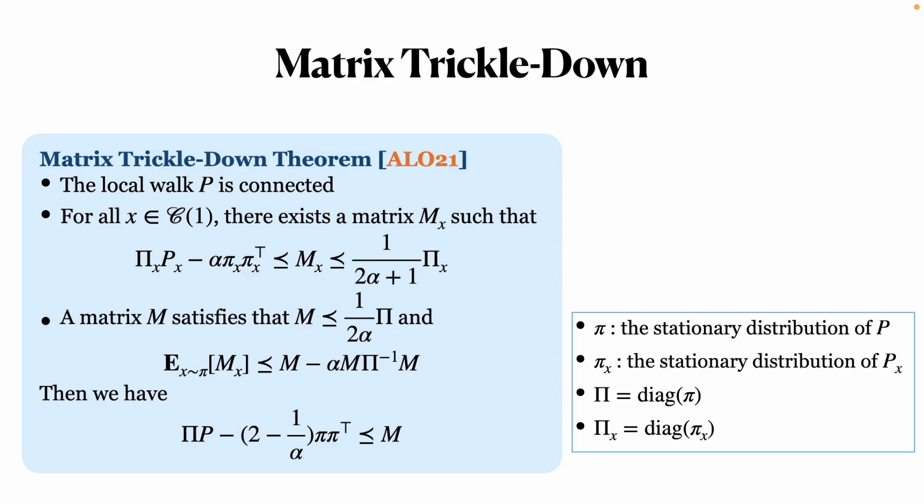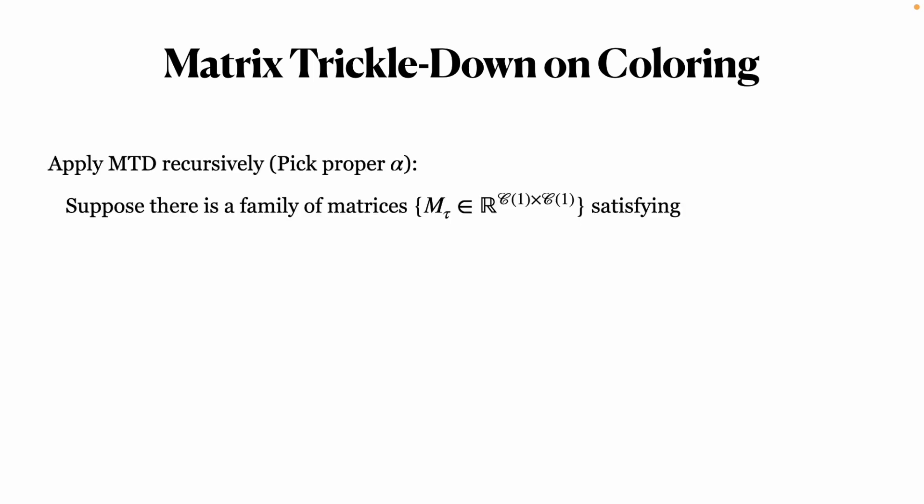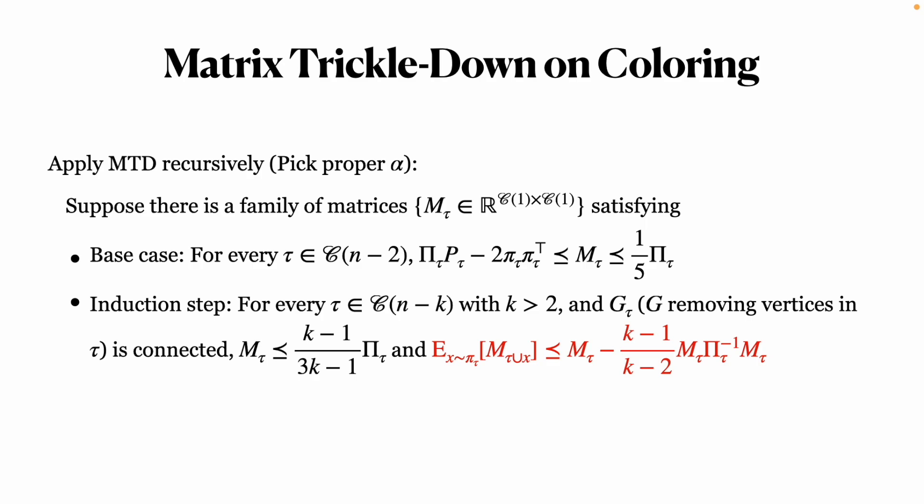Matrix trickle down theorem shows that by constructing a matrix Mx upper bounding the local walk Px and satisfying certain conditions of M and Mx, we can establish M as the upper bound of the local walk P. Applying this theorem recursively, our task is simplified to construct a family of matrices meeting the base case where there are only two free vertices and the induction constraints captured by the red inequality for all other levels.